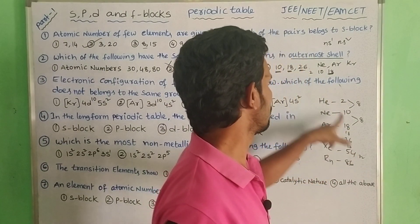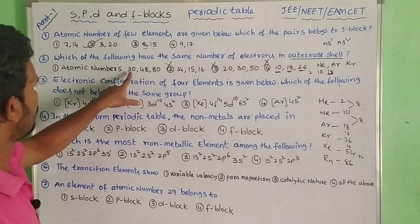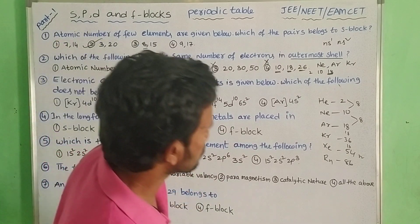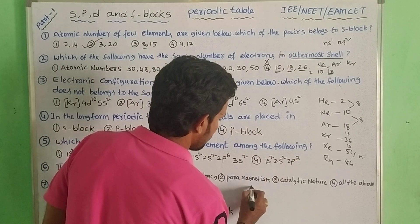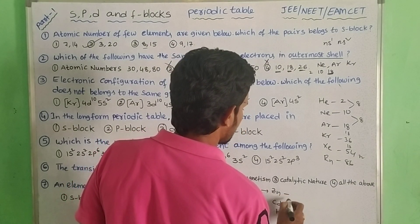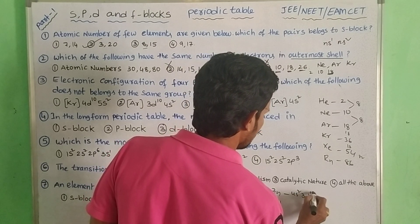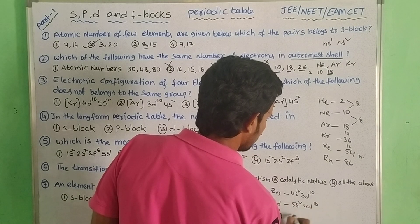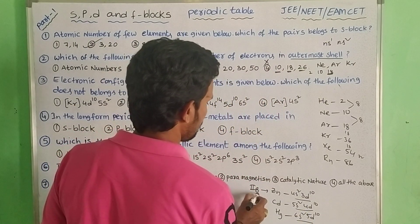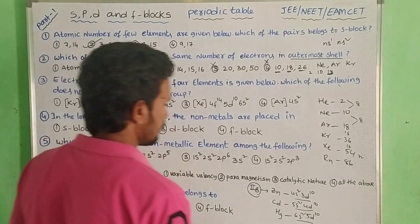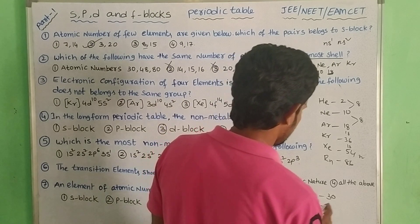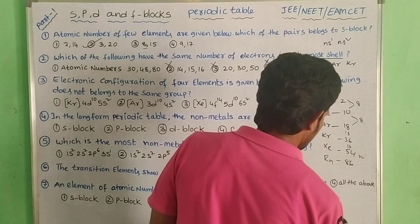B-block — the last group is 2B group: Zinc, Cadmium, Mercury. Their configurations are 4s2 3d10, 5s2 4d10, and 6s2 5d10 respectively. They are in the D-block, same group. The atomic numbers are 30, 48, and 80.